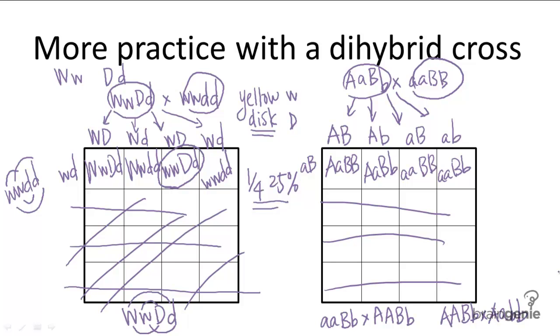So remember, look for the gametes first. Then fill out the top and the side columns, and then you can just fill in the Punnett square.